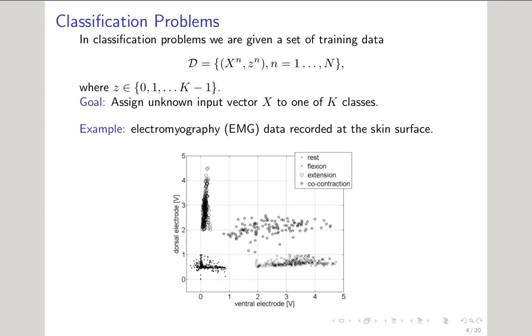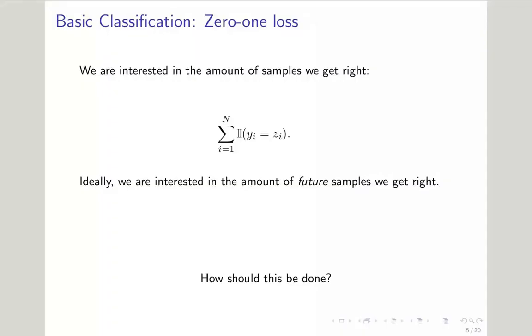When we graph the data points into 2D space, we happen to see a nice separation with this dataset. We could then use a method called 0-1 loss, also known as the misclassification error, to help us minimize the data points that we are classifying incorrectly, and maximize those that we're classifying correctly. While this is a straightforward method, it happens to be non-convex and NP-hard to optimize.